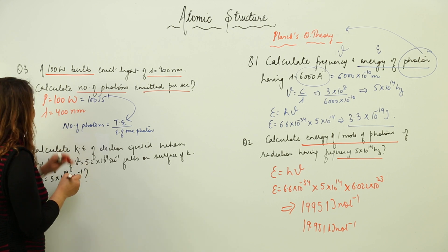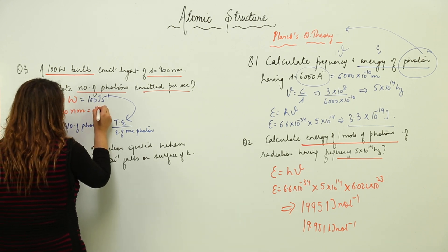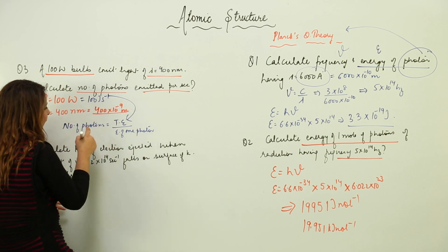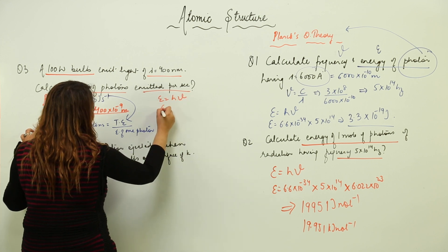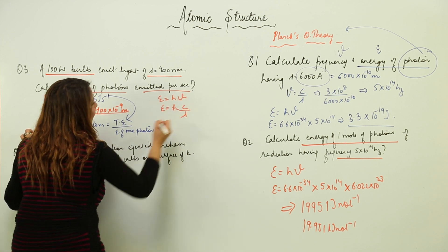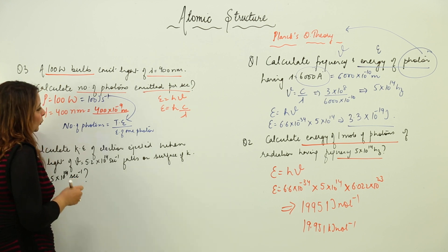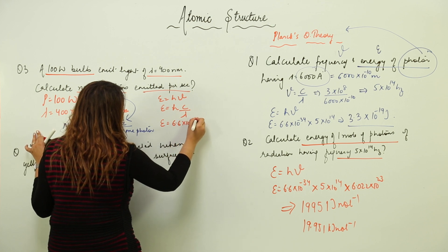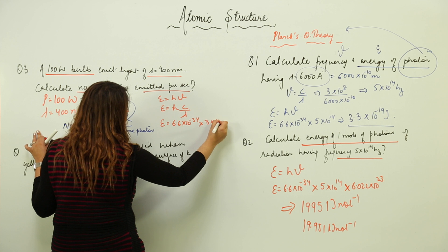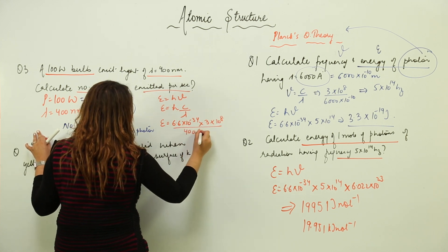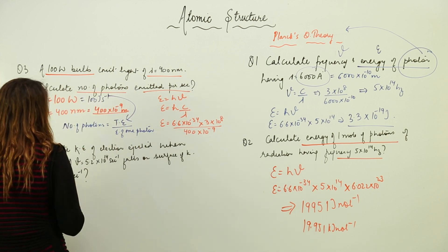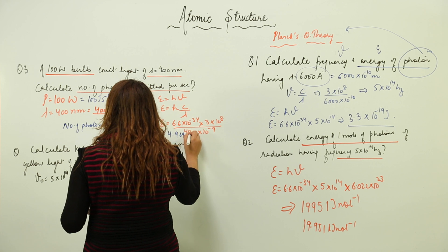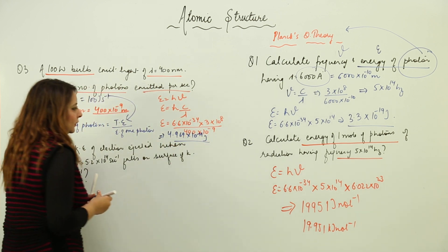We need to find the energy of one photon. Converting wavelength: 400 nm = 400 × 10⁻⁹ meters. We use E = hc/λ, since ν = c/λ. Putting in values: h = 6.6 × 10⁻³⁴, c = 3 × 10⁸, λ = 400 × 10⁻⁹. Solving gives E = 4.969 × 10⁻¹⁹ joules.